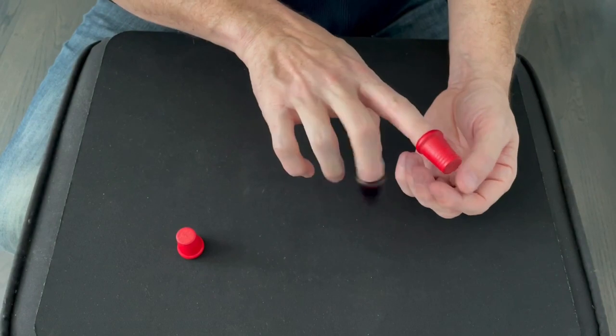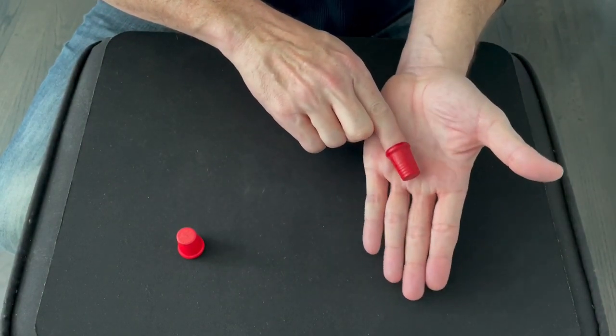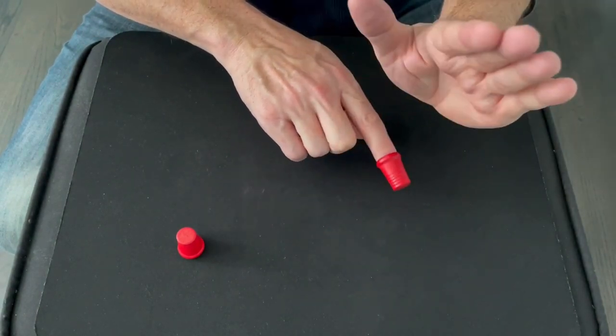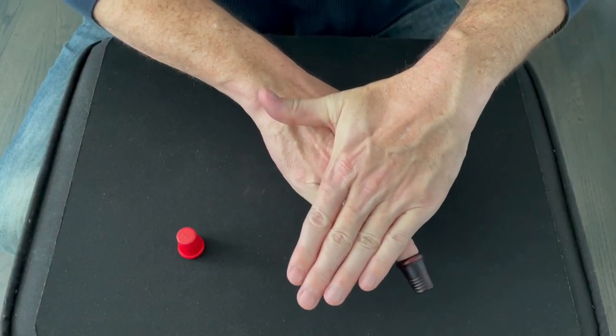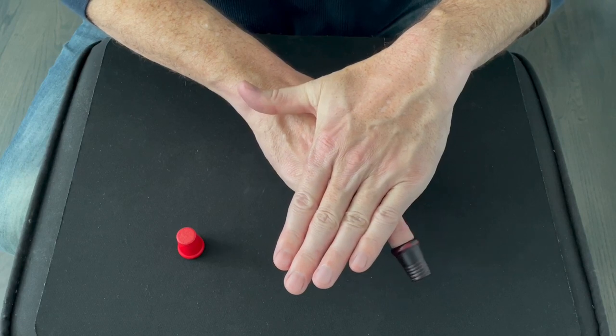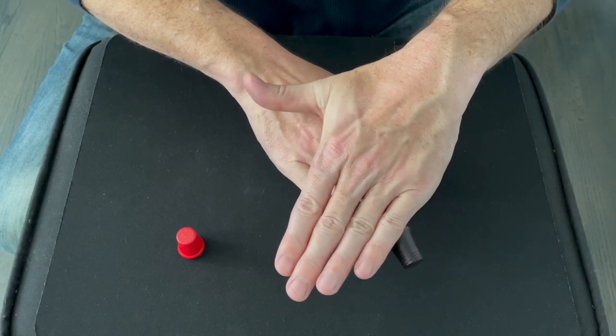To do the color changing thimbles, you'll use two different thimbles on two different fingers. And under the cover of your hand, you'll pull one finger back and put the other finger out as you show it. And then as you pull back, you'll switch them back, making it appear as though the thimble changed colors.